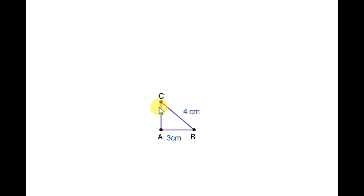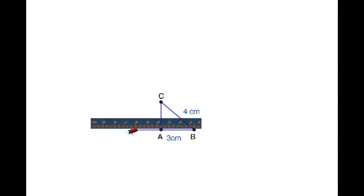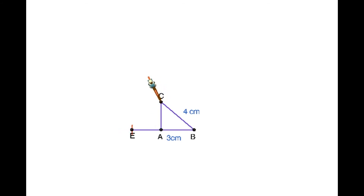Root 7 squared gives the square. Now, select the AC length using a compass. Extend the line from A and mark an arc. When the arc touches the extended line, that point is called E.